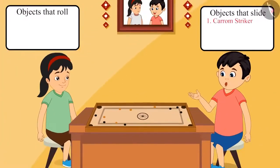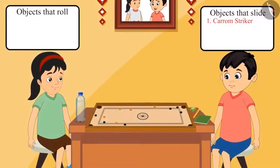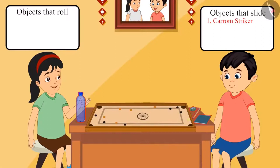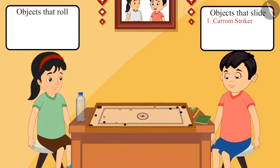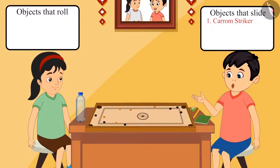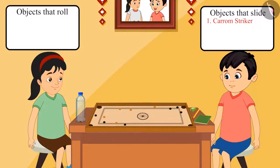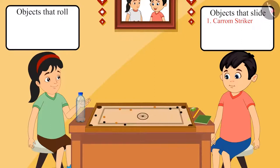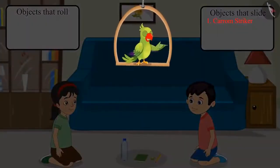Oh wow, we got one example! Come on Pinky, let's see by pushing more objects like this. Pinky and Chotu collected some objects from the house. Chotu, now let's try to push them on the carom board. But Pinky, this carom board is very small — all these objects will not fit into it. How will we push objects on it? So we will push every object on the floor one by one and see which objects are rolling and which are sliding.